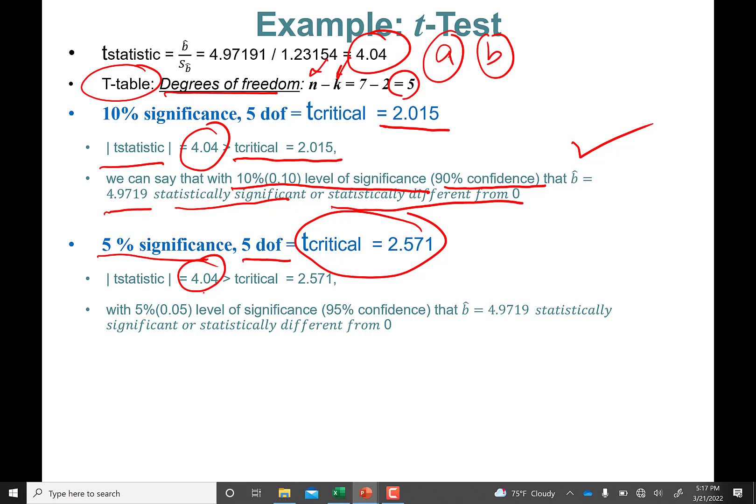That is going to—the t-statistic in absolute value exceeds the t-critical value we read from the table. You can say that with 5% level of significance, or 95% confidence, beta is statistically significant and statistically different from zero.